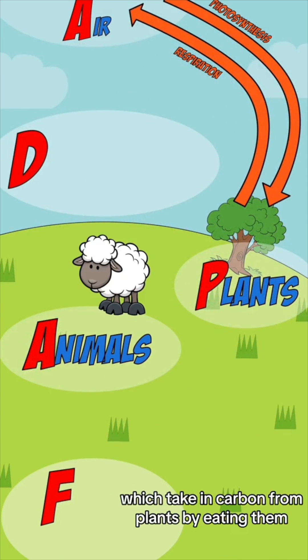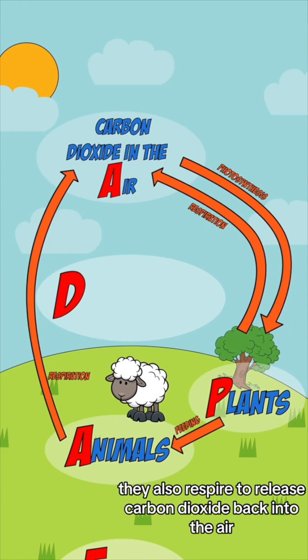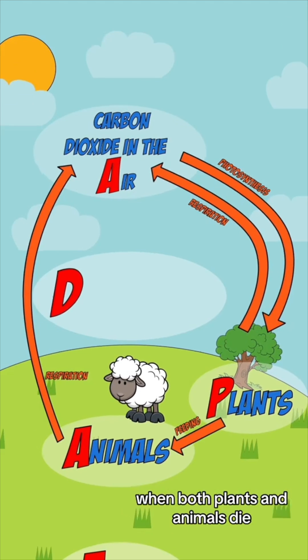The second A is for animals, which take in carbon from plants by eating them. They also respire to release carbon dioxide back into the air.